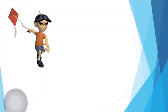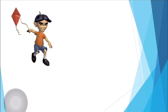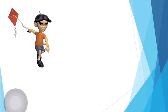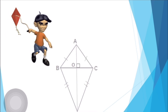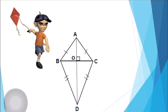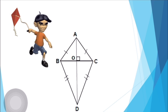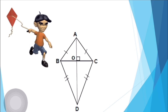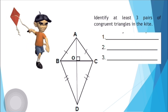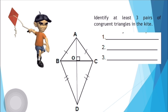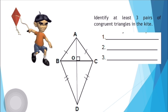One summer, Marlon attended the Sarangola Festival in Pandi, Bulacan. He notices that the spars of the kite produce multiple congruent triangles. Let us help Marlon identify the different congruent triangles in the kite. I will give you 30 seconds to find the 3 pairs of congruent triangles in the kite.